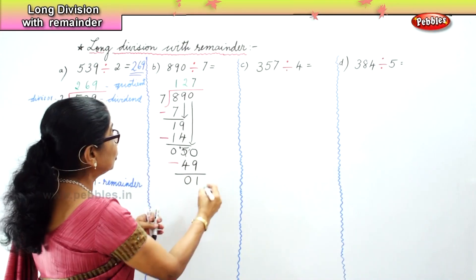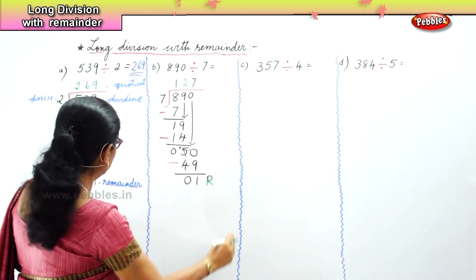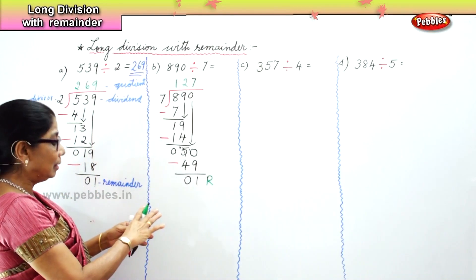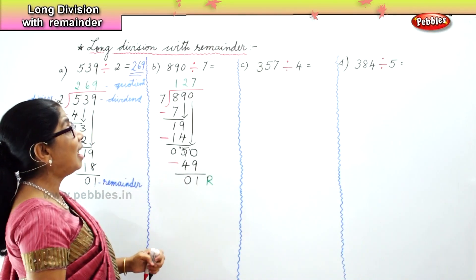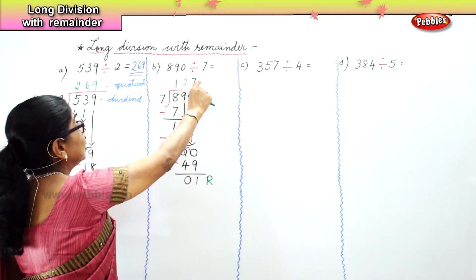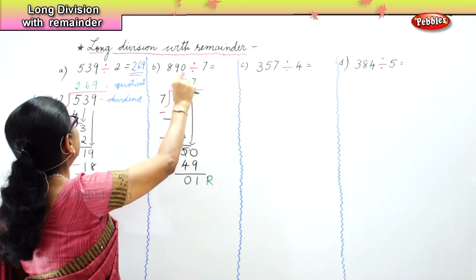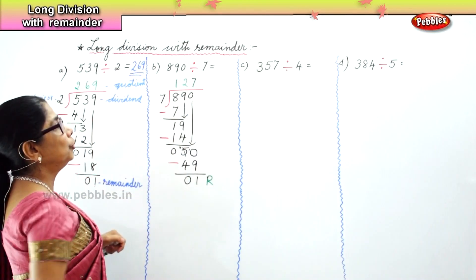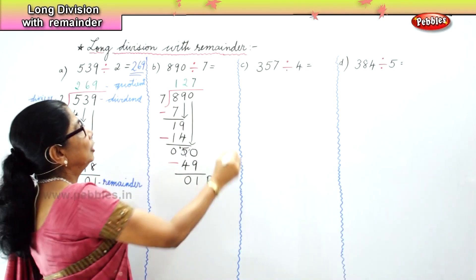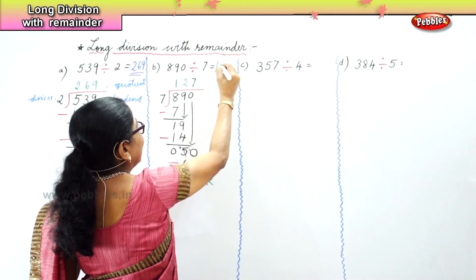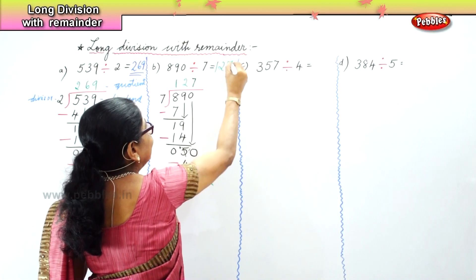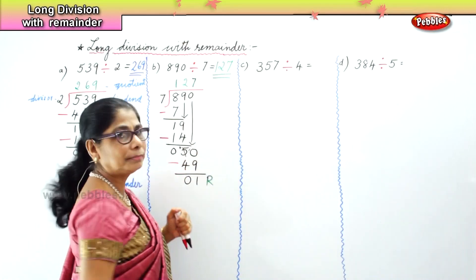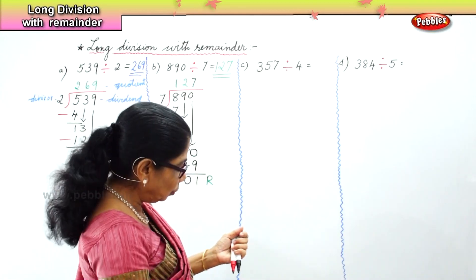So the answer is 127 remainder 1. The quotient 127 times the divisor 7, plus 1, gives back the dividend 890. Your answer is 127.